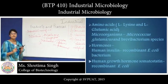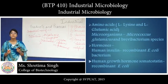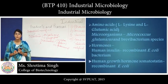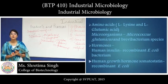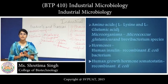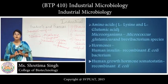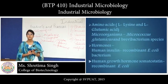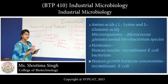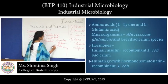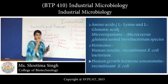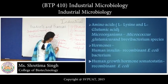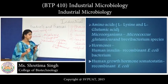Apart from lactic acid, vinegar, and amino acid production, certain hormones are also produced by bacteria. This involves mainly recombinant DNA technology. The hormones produced include human growth hormone (somatostatin) and human insulin. All of these are produced by different varieties of recombinant E. coli, and the approach followed is genetic engineering.